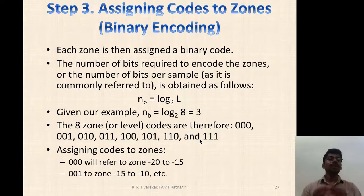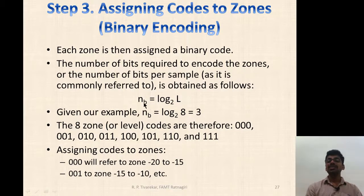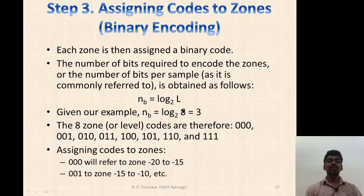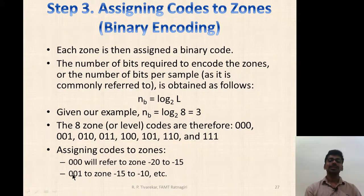Each zone is then assigned a binary code. The number of bits required depends on the number of quantization levels: if we have L quantization levels, the number of bits necessary is log₂(L). With 8 quantization levels, the necessary number of bits per sample is 3. The 8 zones are assigned binary codes from 000 to 111: 000 is the lowest zone (−20 to −15), 001 is the second zone (−15 to −10), and so on.